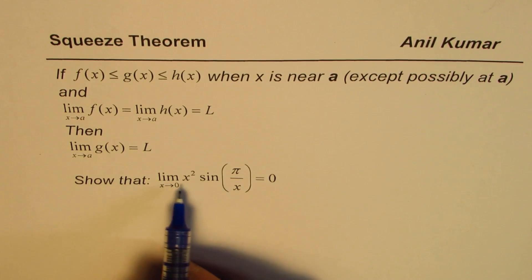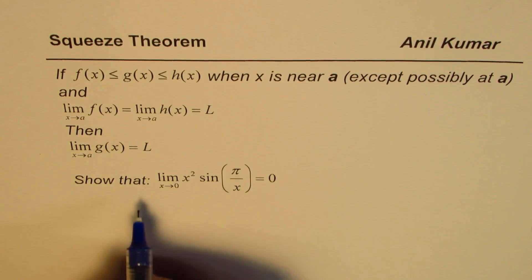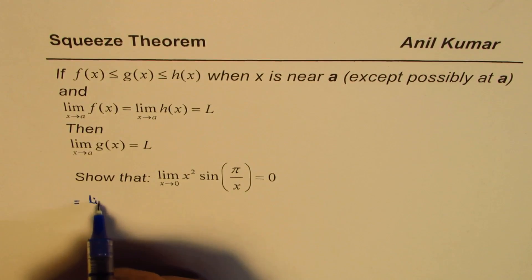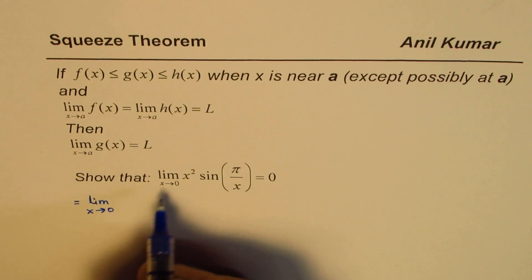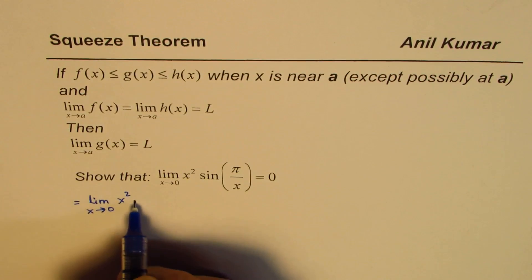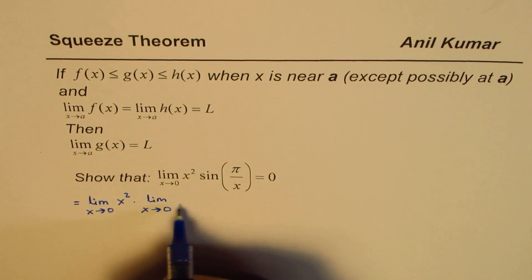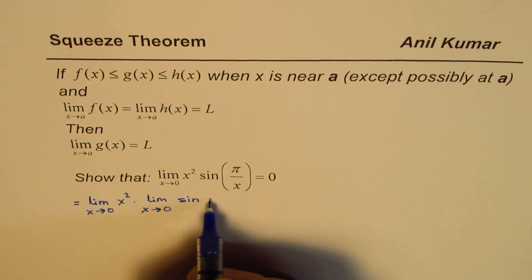Normally in the limits you could apply the properties of limit and you could say this limit is equal to limit when x approaches 0 for x² times limit when x approaches 0 for sin(π/x). You could do that.